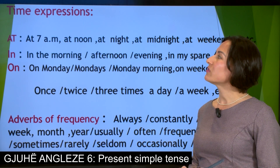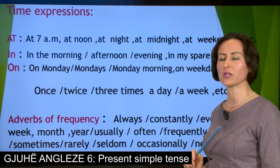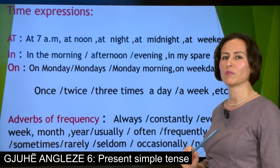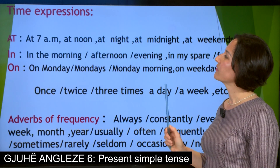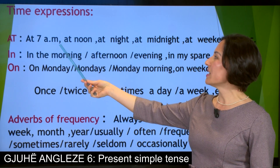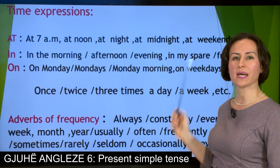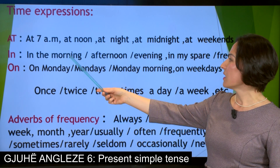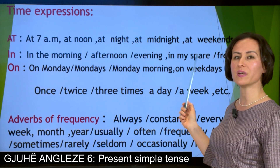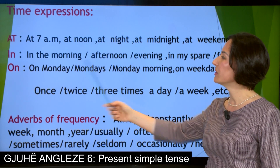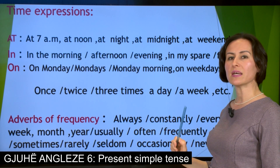We have arrived at the usage of time expressions, which are very important because they make the present simple more distinct. Pay attention to some of them. With AT: at 7 a.m., at noon, at night, at midnight, at weekends. With IN: in the morning, in the afternoon, in the evening, in my spare or free time. With ON: on Monday, on Mondays, on Monday morning, on weekdays.